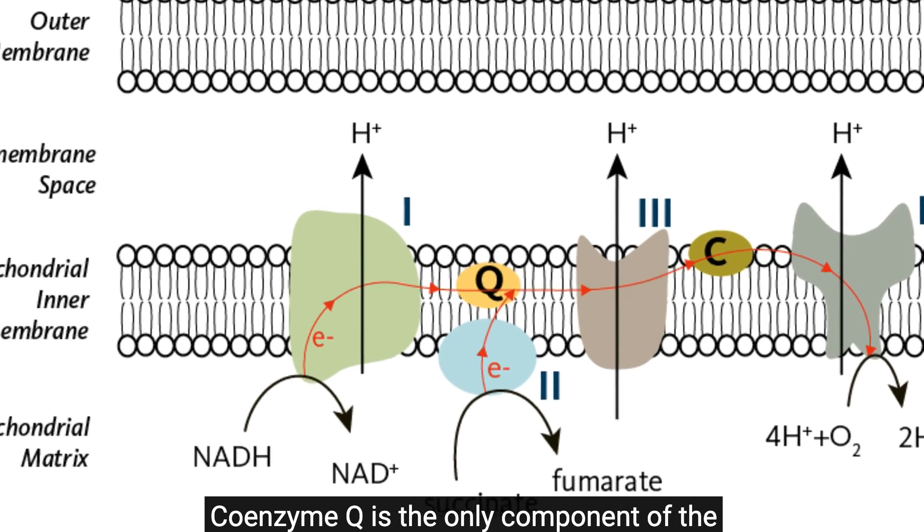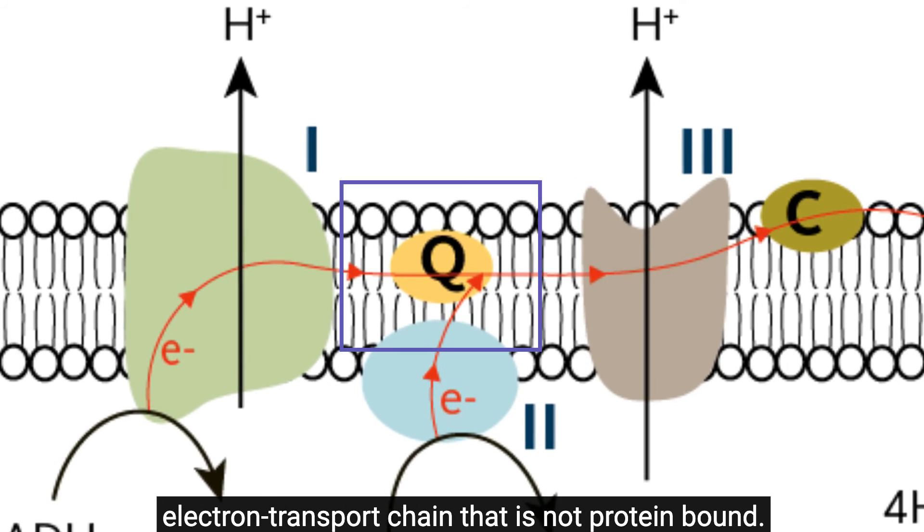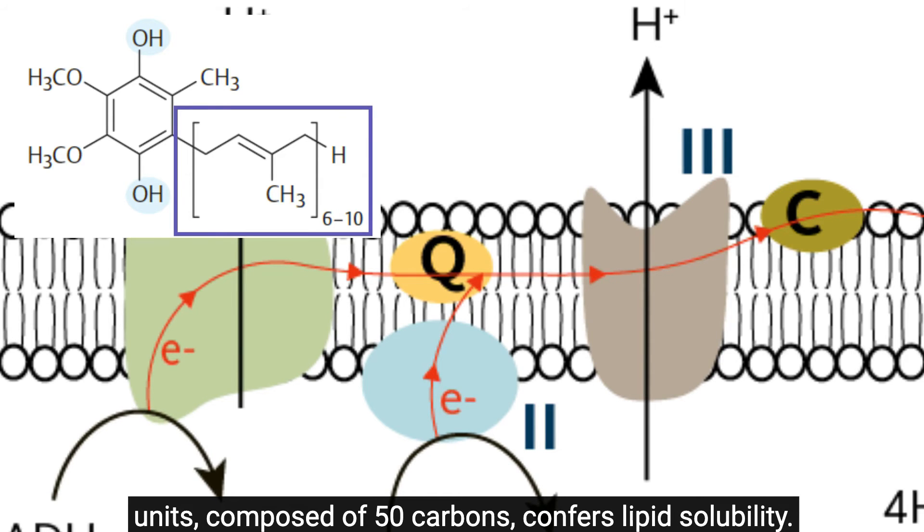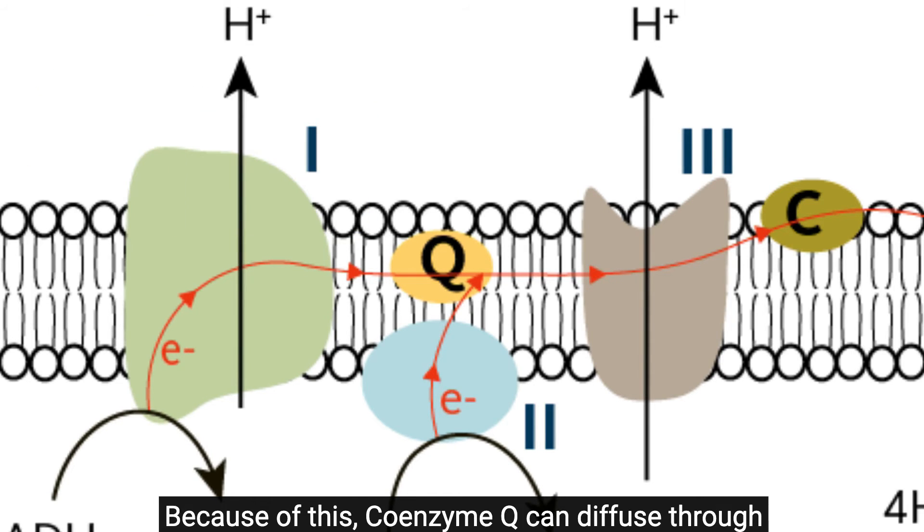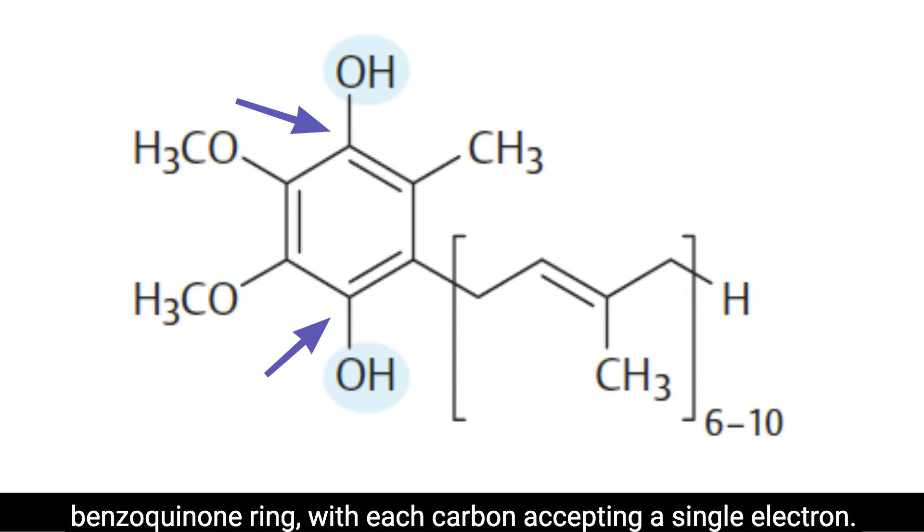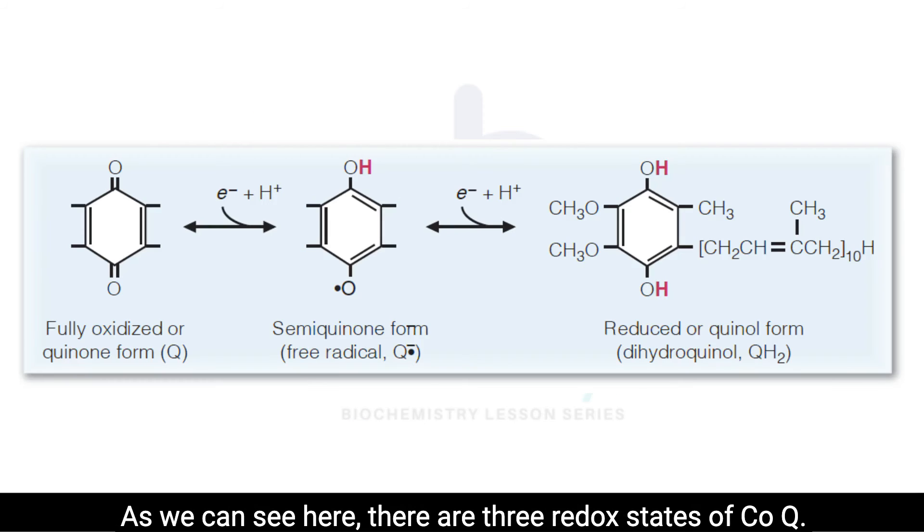Coenzyme Q is the only component of the electron transport chain that is not protein-bound. The large hydrophobic side chain of 10 isoprenoid units composed of 50 carbons confers lipid solubility. Because of this, coenzyme Q can diffuse through the lipids of the inner mitochondrial membrane. The active sites of coenzyme Q involve carbons 1 and 4 of the benzoquinone ring, with each carbon accepting a single electron.